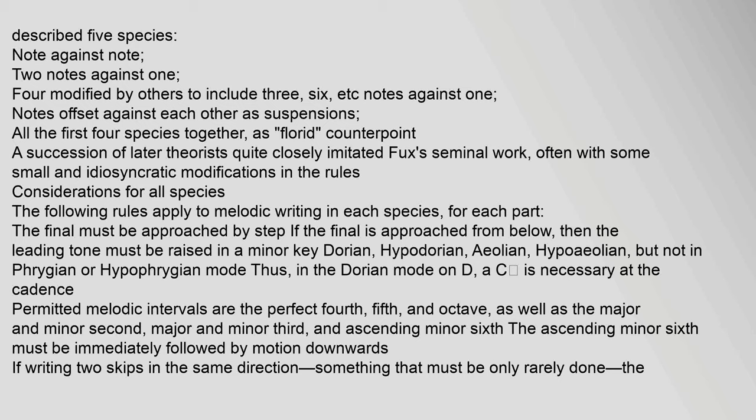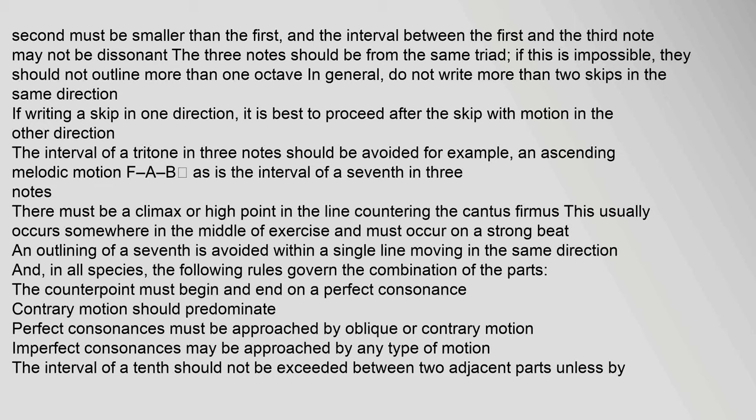The ascending minor sixth must be immediately followed by motion downwards. If writing two skips in the same direction — something that must be done only rarely — the second must be smaller than the first, and the interval between the first and the third note may not be dissonant. The three notes should be from the same triad; if this is impossible, they should not outline more than one octave. In general, do not write more than two skips in the same direction. If writing a skip in one direction, it is best to proceed after the skip with motion in the other direction.